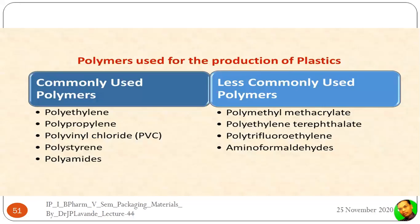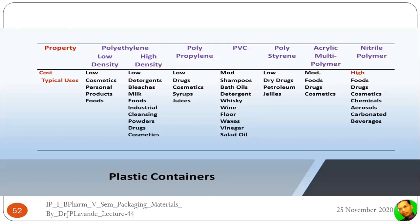The different polymeric materials used for producing plastics include the commonly used: polyethylene, polypropylene, polyvinyl chloride (PVC), polystyrene, and polyamides. The less commonly used materials are polymethyl methacrylate, polyethylene terephthalate, polytrifluoroethylene, and amino formaldehydes. All these polymers are used to produce plastic materials.